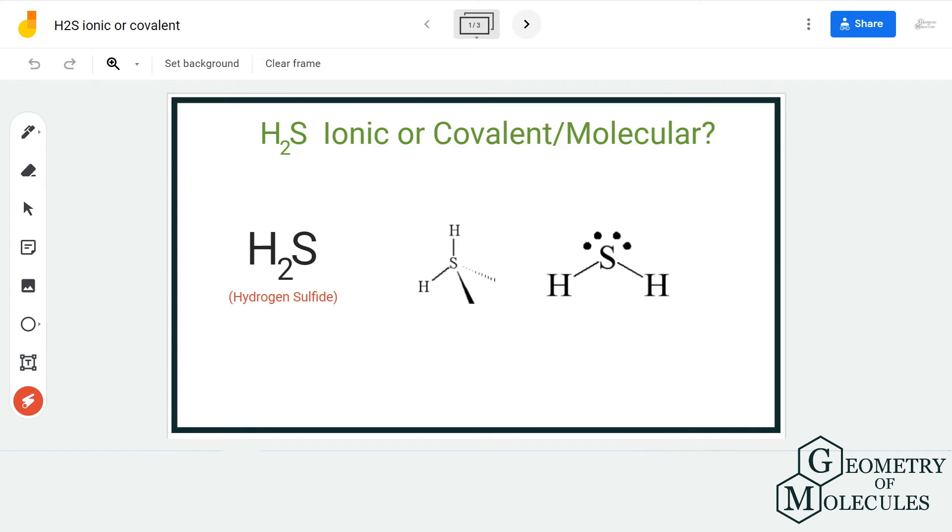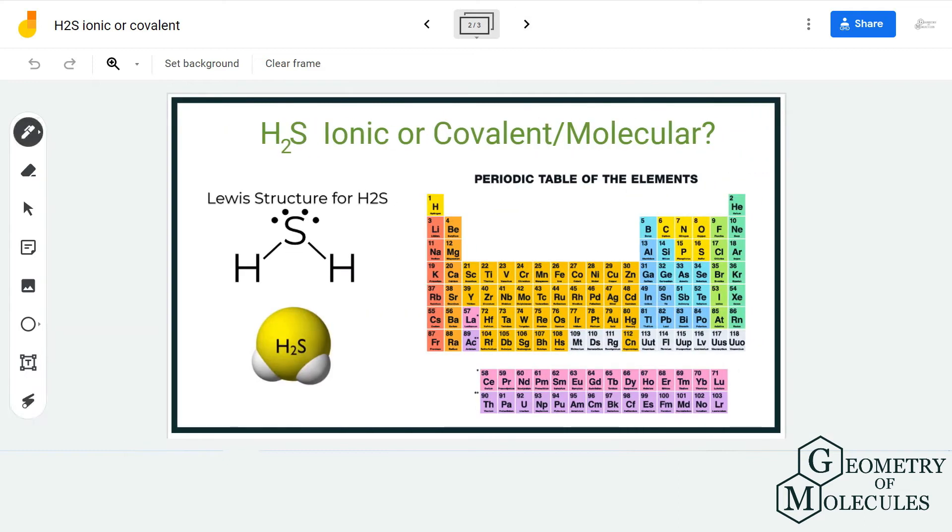the periodic table and determine what kind of elements these hydrogen and sulfur atoms are. If you look over here, hydrogen is a group 1 element and it comes under the non-metals. Similarly, if you look at sulfur,